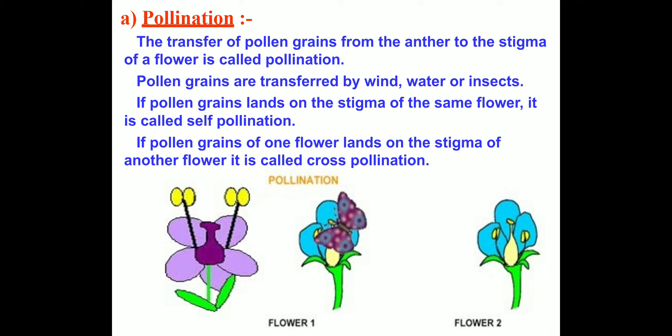Pollination is of two types: self-pollination and cross pollination. If pollen grains land on the stigma of the same flower, it is called self-pollination. If the pollen grains of one flower land on the stigma of another flower, it is called cross pollination, as you can see in this figure — the first is the same flower and the second is a different flower.